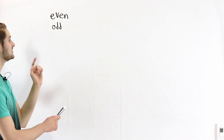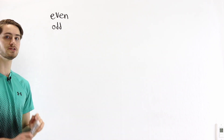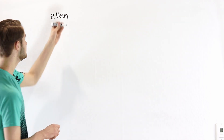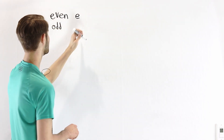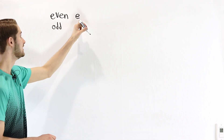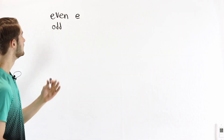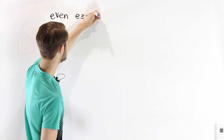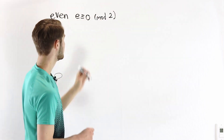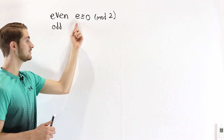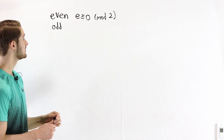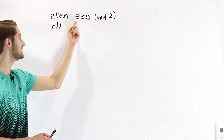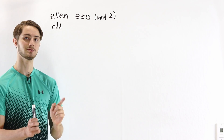Let's talk about the definition of even and odd numbers in terms of modular arithmetic. We'll use the letter E to denote an even number — this is not 2.718, this is just an integer. This integer is even if it is congruent to 0 mod 2, because that means E minus 0 is a multiple of 2, or in other words E is a multiple of 2, so it's even.